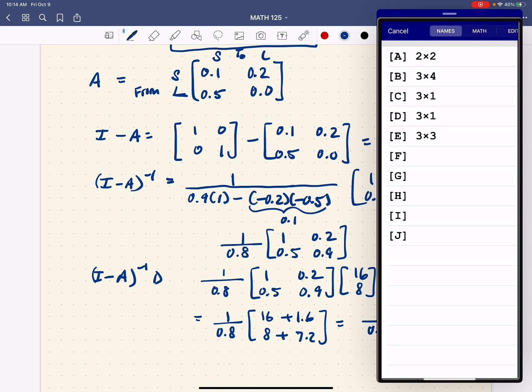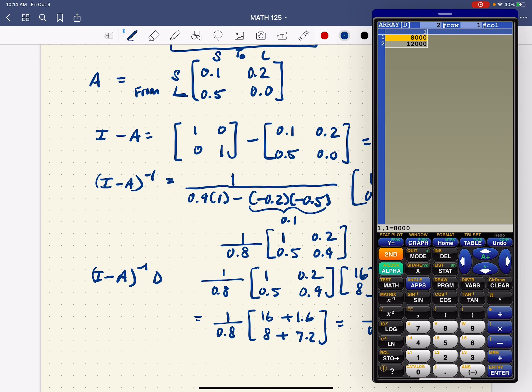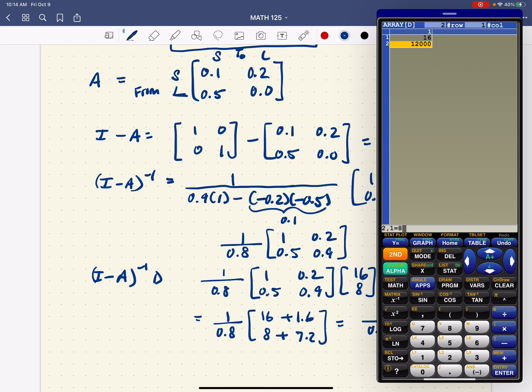And I'm going to go back to the matrix menu. And I'm just going to use D because it's the same letter. It's just nice to use the same symbols when we can. So that's a 2 by 1. And my demand matrix is 16 in the first entry, 8 in the second.